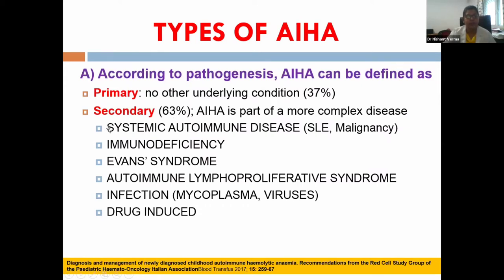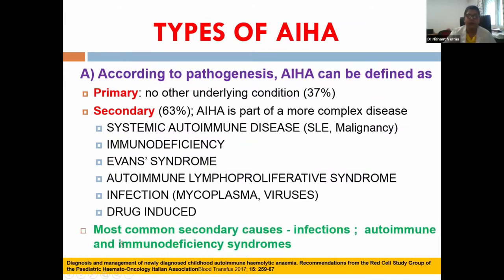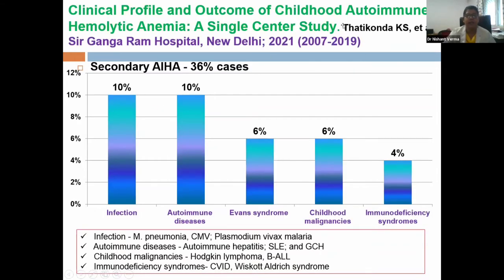The most common secondary diseases are systemic autoimmune diseases like SLE, malignancy, immunodeficiency syndromes, Evans syndrome, autoimmune lymphoproliferative syndrome, infections like mycoplasma and other viruses, and drug-induced causes. Among secondary causes, the most common are infections, then autoimmune diseases, then immunodeficiency syndromes. A 12-year retrospective study from Sir Ganga Ram Hospital found secondary cases in about 40 percent, with common etiologies being infections, autoimmune diseases, Evans syndrome, and childhood malignancies like Hodgkin lymphoma and B-ALL.